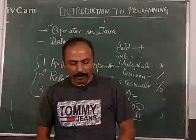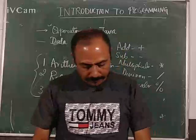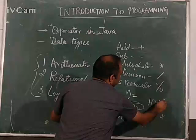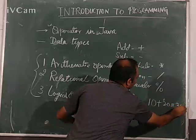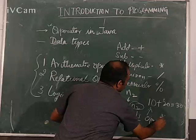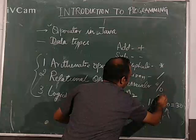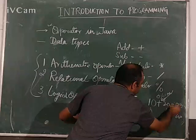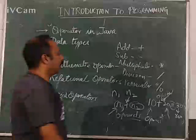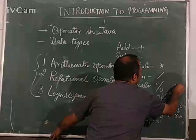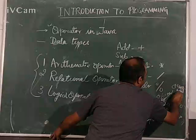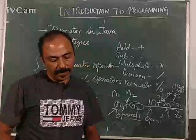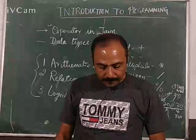Let's see one example. If I have to add 10 plus 20, I get 30. In this expression: 10 is the operand, 20 is the operand, the plus is the operator, and the equals sign is the assignment operator. So one expression is made up of operators, assignment operators, and operands.